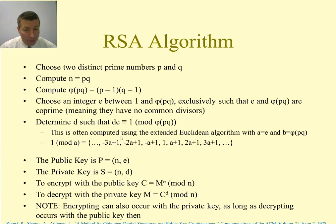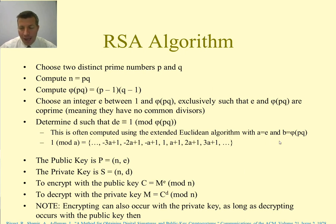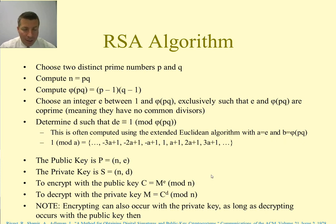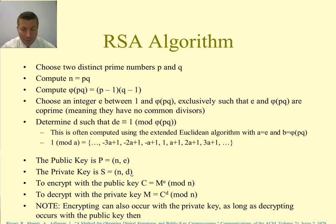The extended Euclidean algorithm takes two parameters a and b. If we use e as a and φ(pq) as b, the value x returned is our value d. Once we have these five steps complete, the public key is (n, e) and the private key is (n, d). Keep d secret and you have your RSA private key.